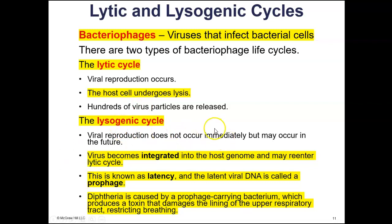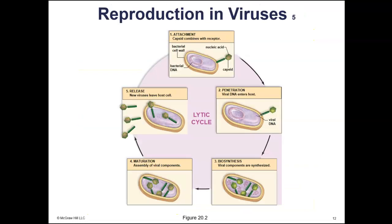There is also the lysogenic cycle, where viruses can go into a dormant or latent stage. The DNA from the virus is integrated into the host cell's genome. It remains there without actively producing viruses. For example, diphtheria — which we get vaccinated for as children — is caused by a prophage-carrying bacterium. A prophage is the viral DNA and bacterial DNA combined once integrated. Diphtheria is caused by a bacterium that carries a prophage and produces a toxin that damages the lining of the upper respiratory tract, affecting breathing.